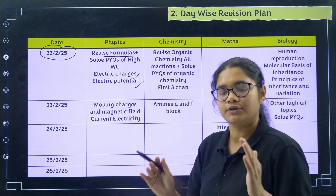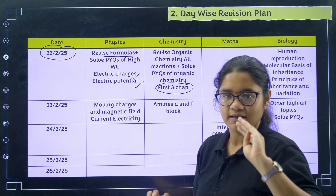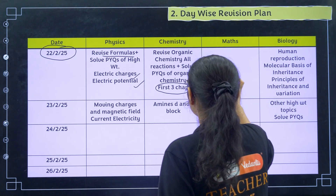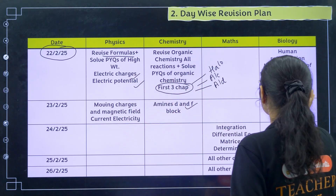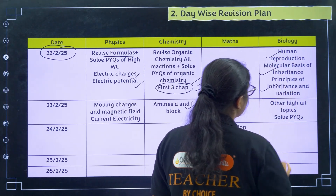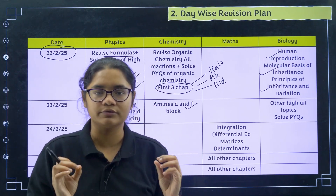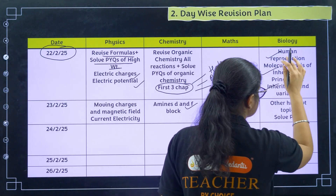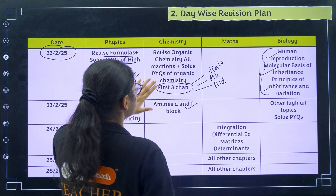Coming to chemistry on 22nd: you only have to revise organic chemistry, specifically the first three chapters — haloalkanes and haloarenes, alcohols phenols and ethers, and aldehydes ketones and carboxylic acids. On the next day, you will also revise biology. In biology on 22nd, revise human reproduction, molecular basis of inheritance, and principles of inheritance and variation. Go through your short notes and then start solving PYQs of the last five years. For physics and chemistry on 22nd, revise as well as solve previous year questions.